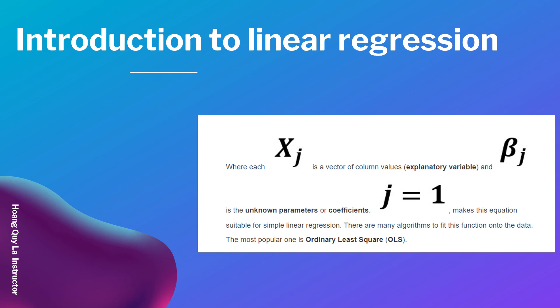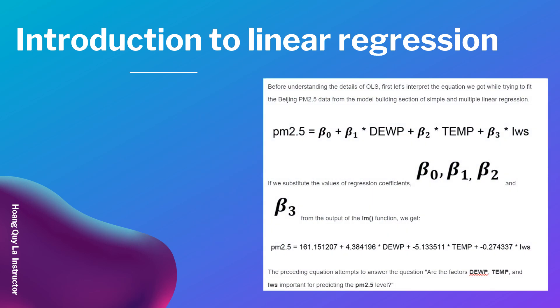There are many algorithms to fit this function onto the data. The most popular one is Ordinary Least Squares, or OLS. Before understanding the details of OLS, let's first interpret the equation we got while trying to fit the Beijing PM 2.5 data from the model building section of simple and multiple linear regression.